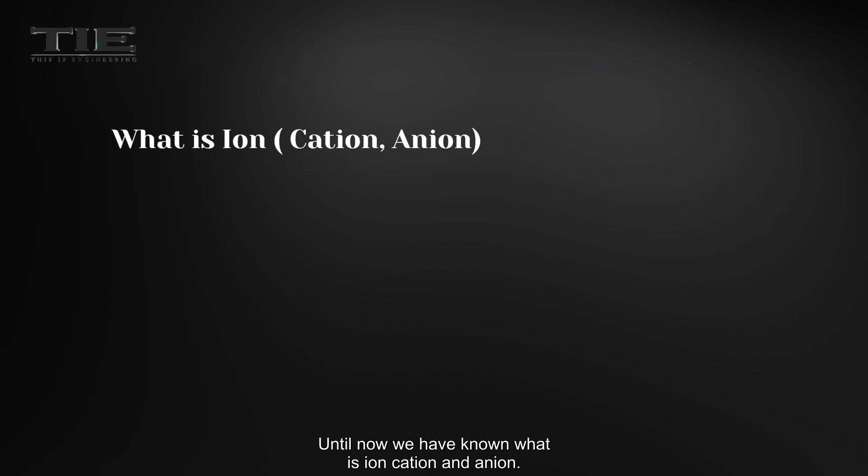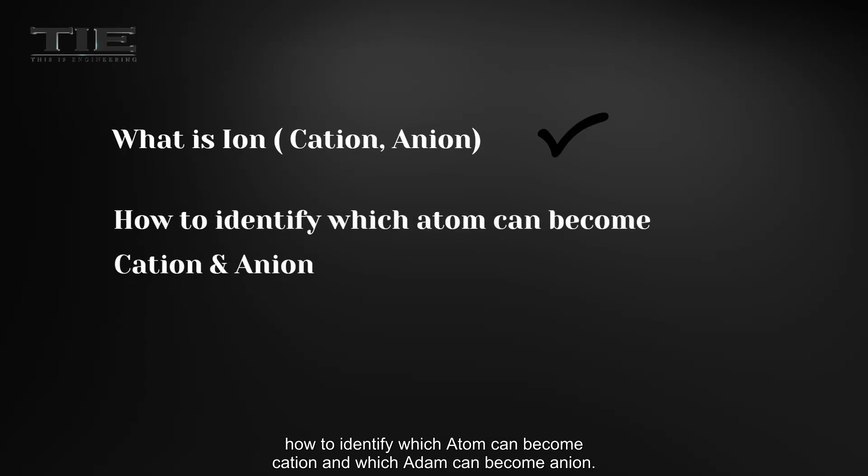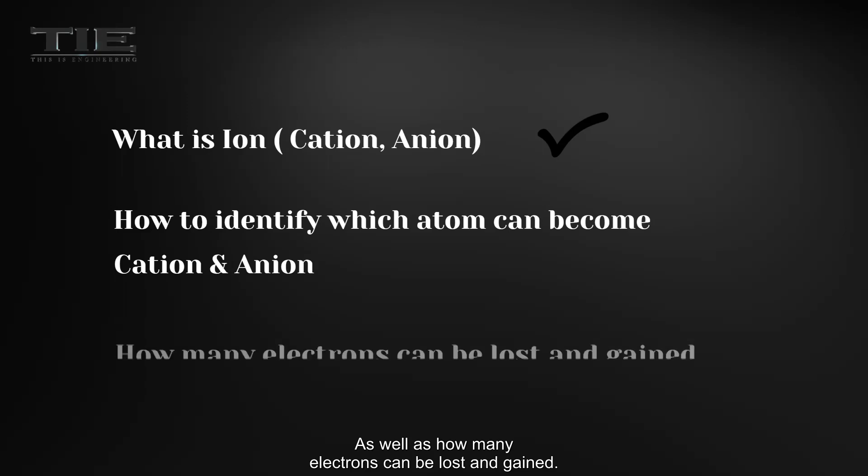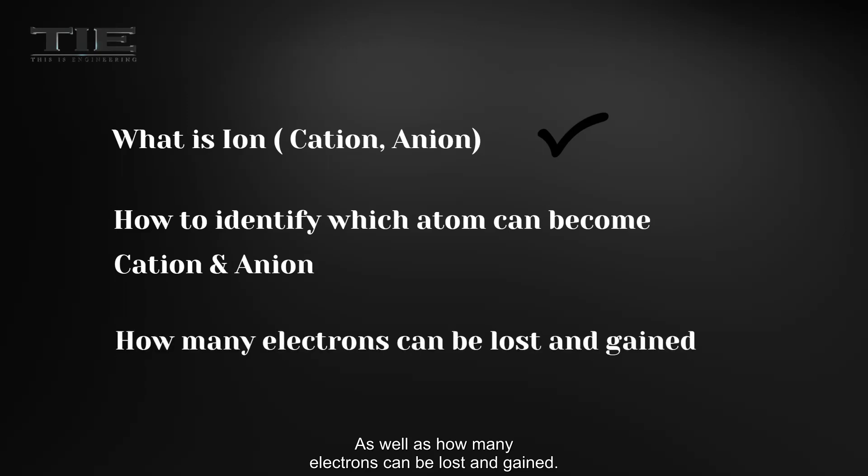Until now, we have known what is ion, cation and anion. Okay, now let's go to find out how to identify which atom can become a cation and which atom can become an anion, as well as how many electrons can be lost and gained.